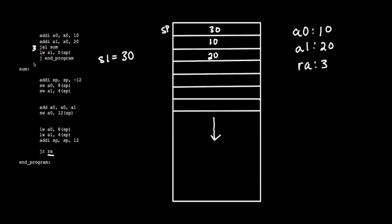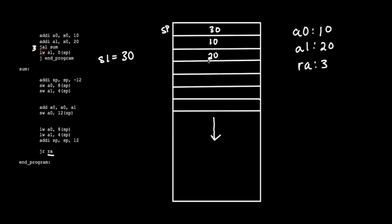We don't do anything else, so it's kind of a weird program — we just jump to the end and nothing happens. But I hope you were able to see that if we do need to save the value of registers, we can just push them onto the stack, and then when we need them, we can just load them from the stack. This is a very powerful tool and concept in computer science. Now we'll step into the more advanced recursive function, factorial.